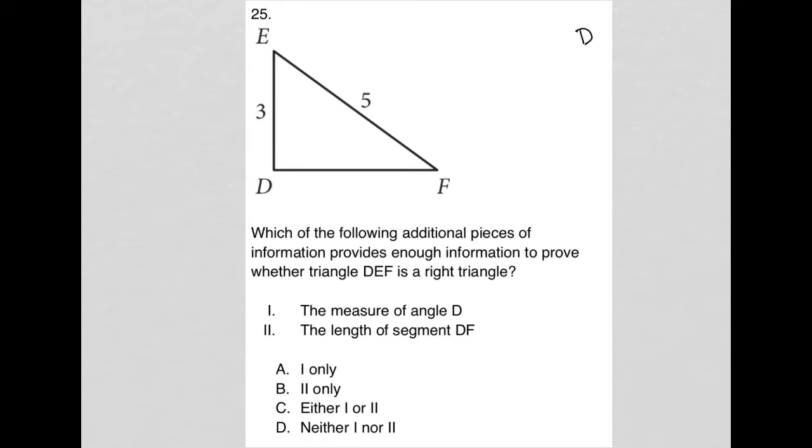So this question is a diagram question. We have what looks like a right triangle, although the angle D isn't indicated to be 90 degrees. So let's read the question and see what's going on here.